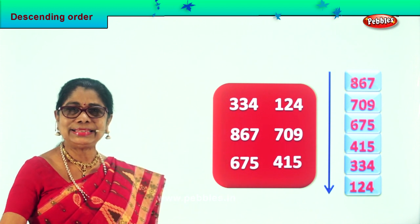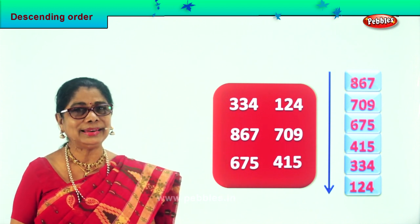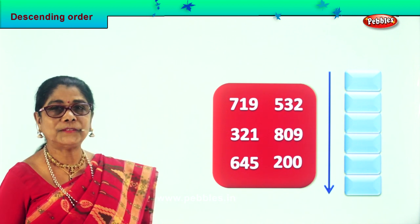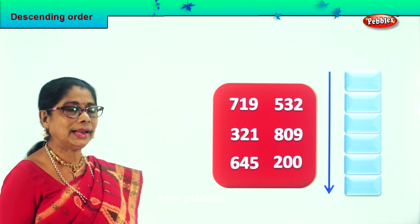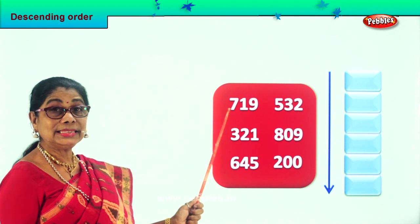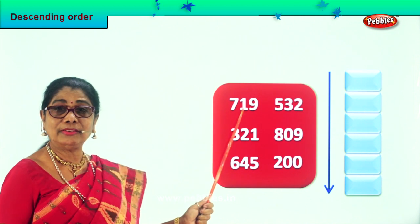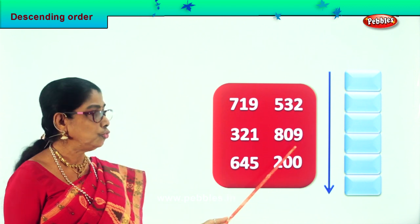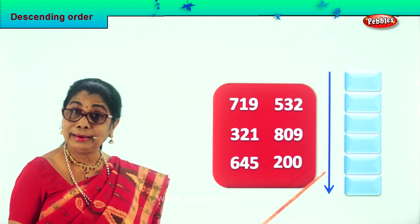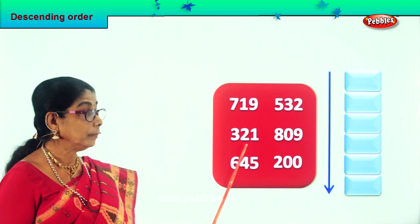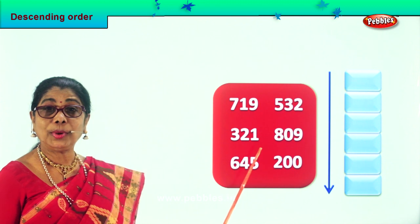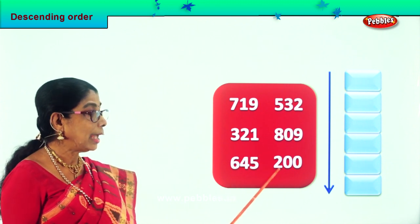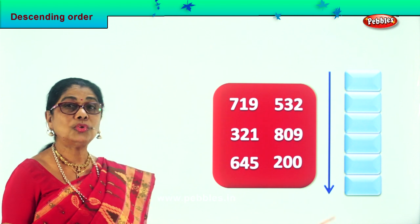Did you enjoy? Let's take another sum and arrange in descending order. First, let's read the numbers aloud. Seven hundred nineteen, five hundred thirty-two, eight hundred nine, three hundred twenty-one, six hundred forty-five, and two hundred.